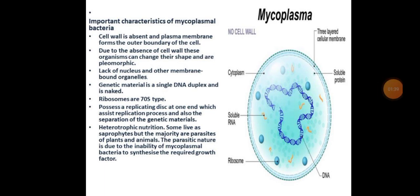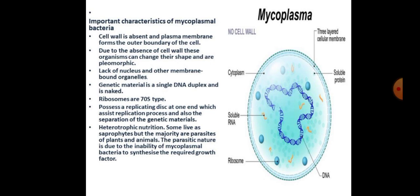These pleomorphic organisms were originally called PPLO — pleuropneumonia-like organisms. They were later given the name Astrococcus mycoidus by Borrel et al., and later the name mycoplasma by Nowak. In 1898, the French scientists Nocard and Roux discovered these organisms from pleural fluids of cattle suffering from bovine pleuropneumonia.